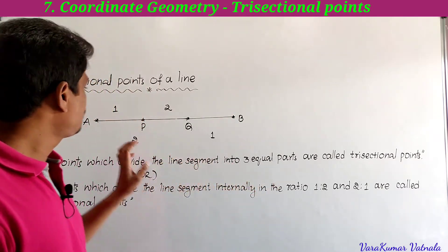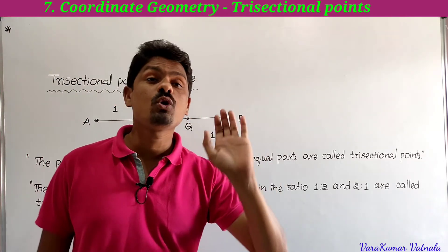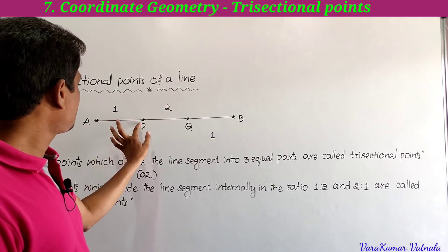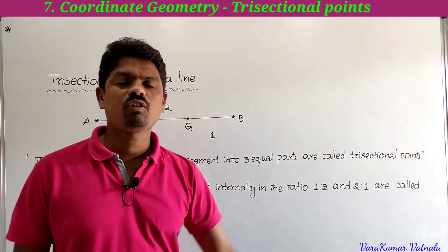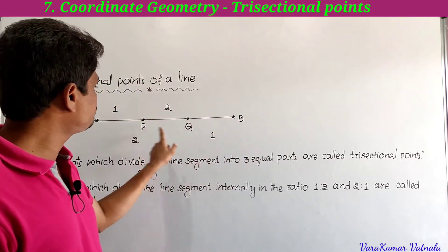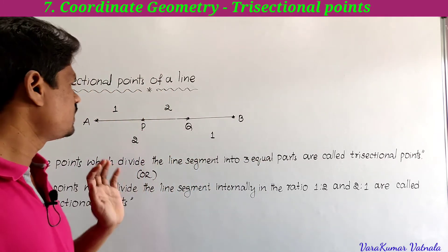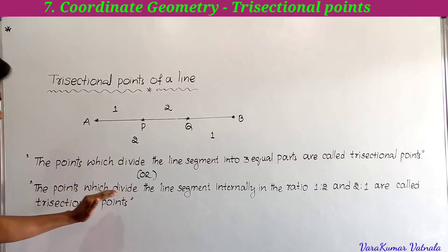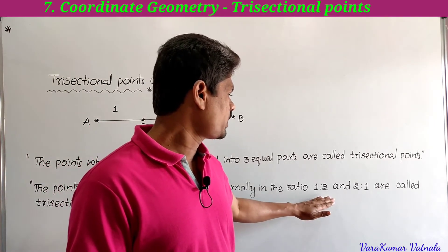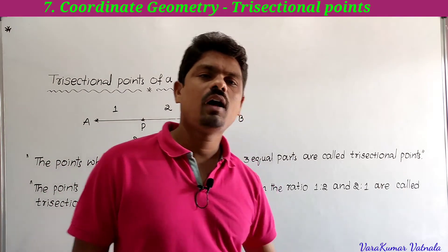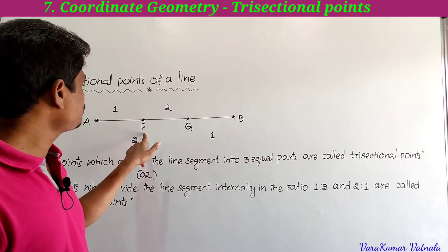Here, AB is a line segment, and P and Q are dividing this line segment into three equal parts. The points P and Q are called trisectional points. In other words, the points which divide the line segment internally in the ratio 1 : 2 and 2 : 1 are called trisectional points.